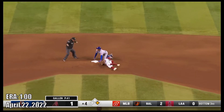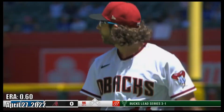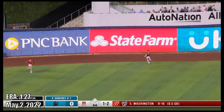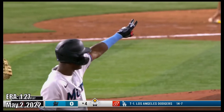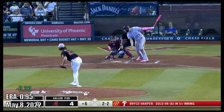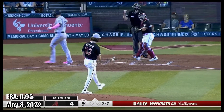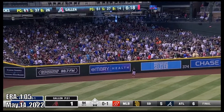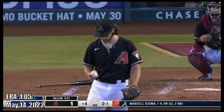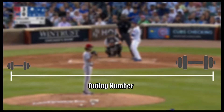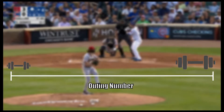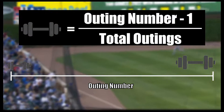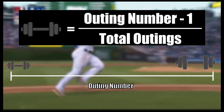The best way to do this is by taking an average of those ERA changes throughout the season. But you can't just take the normal average, because a pitcher's ERA will have bigger changes the closer we get to the start of the year. We're going to counteract this problem by giving more weight to games later in the season and less weight to games earlier in the season. The weight assigned will just be the outing number minus one, divided by the total outings for that pitcher.